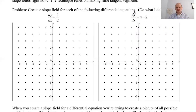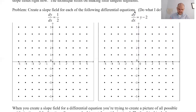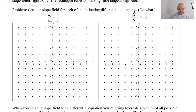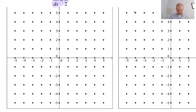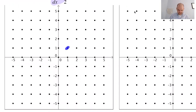We're going to create a slope field for each of the following differential equations. At each of these points, we're going to draw a little tangent segment that has the slope that the differential equation says it should have. A derivative tells you the slope of a tangent line — the slope of a curve at a point. So if the solution curve went through the point 1,1, its slope when it goes through 1,1 should be 1/2. At 1,1 I'm going to draw a little segment with a slope of 1/2 — up 1 over 2.